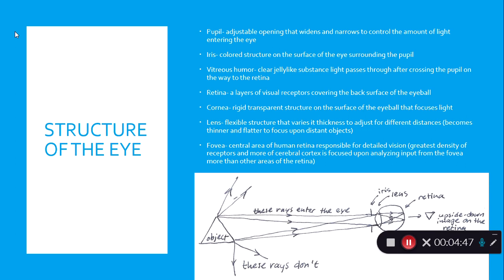The pupil is the opening; the iris gives the eye its color. The vitreous humor is the jelly-like substance in the eye. Light is allowed in through the pupil, which opens or closes to control how much light enters. In the back of the eye is the retina — layers of visual receptors covering the back surface. The fovea is the central area of the retina, containing nothing but cones for color vision.